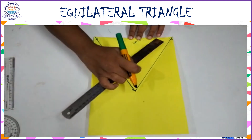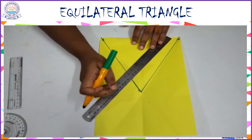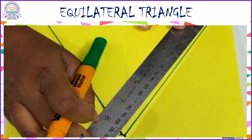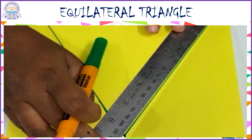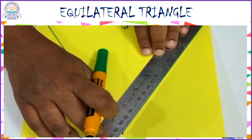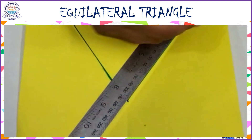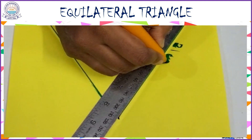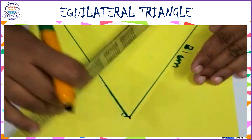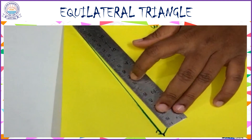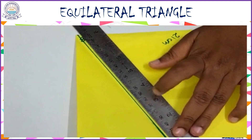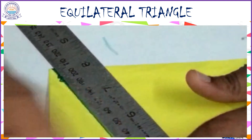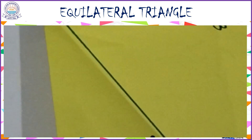Now let's measure the sides of the equilateral triangle — all sides are equal. We should get AC length as 21 cm. And indeed AC length is equal to 21 cm. In the same way, BC length should also be 21 cm.